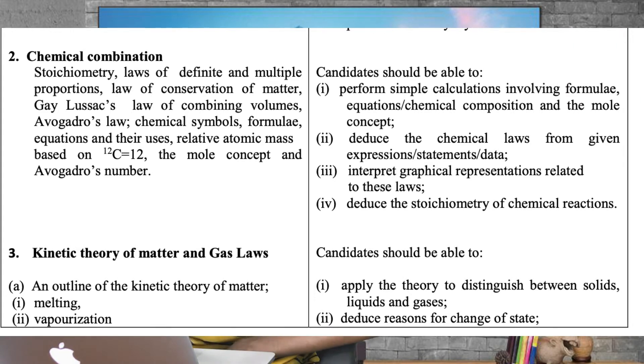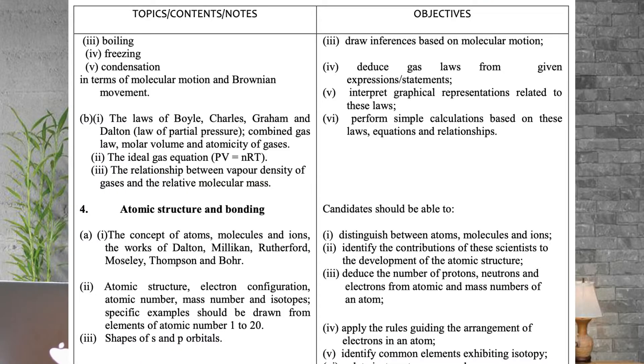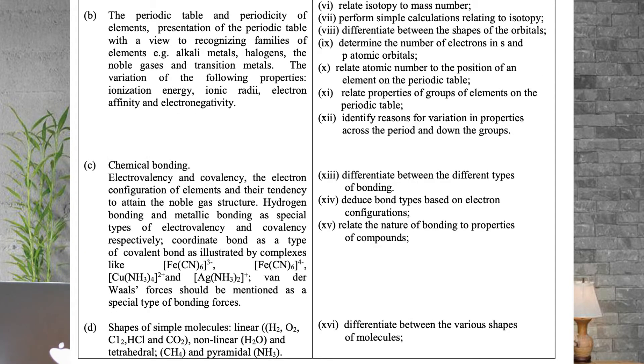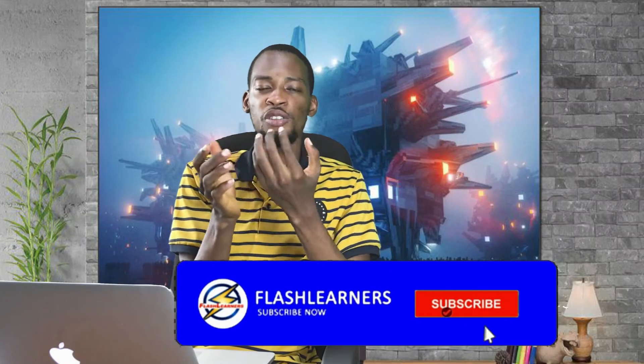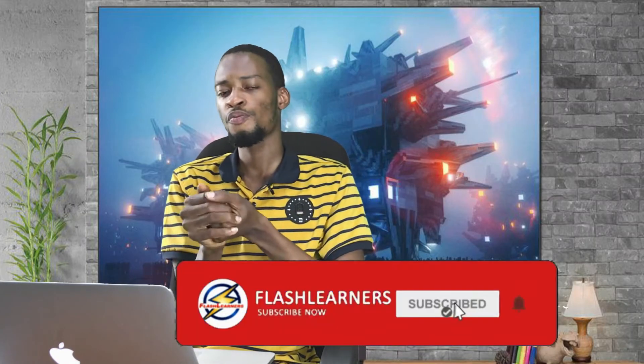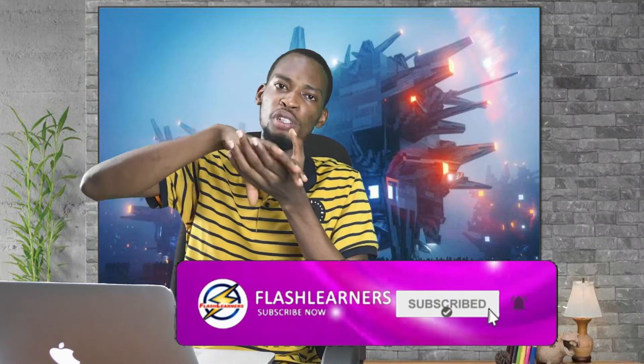Then kinetic theory of matter and gas laws, atomic structure and bonding. Regarding the works of Dalton, Rutherford and others — Dalton said atoms cannot be created or destroyed, and that all matter is made up of small indivisible particles called atoms. There are a whole lot of theories concerning atoms and matter that you need to understand.